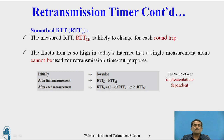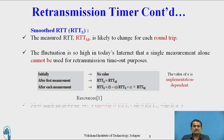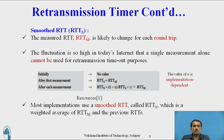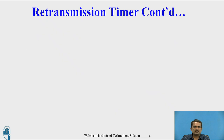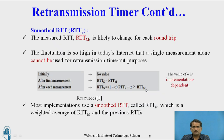The value of alpha is implementation dependent, meaning it depends on the type of implementation being used. Most implementations use the smooth RTT called RTTS, which is a weighted average of RTT_M and the previous RTTS. In upcoming slides, we will find out the values of RTTS, RTT_M, and RTOs.